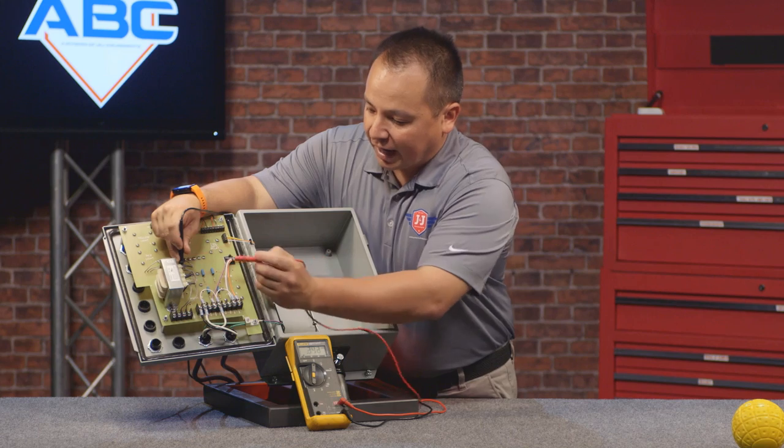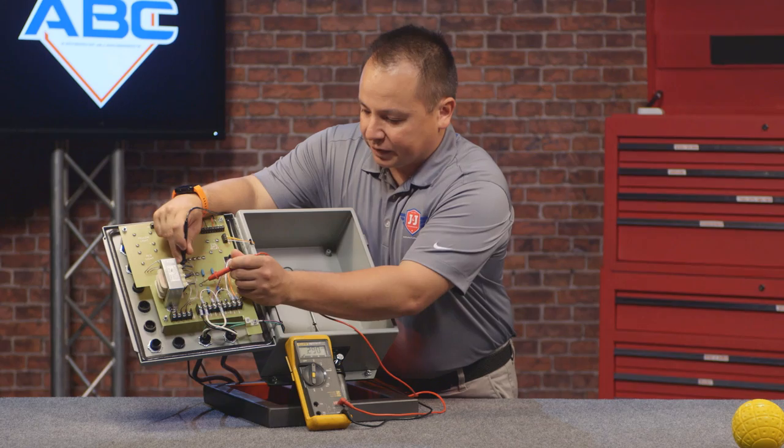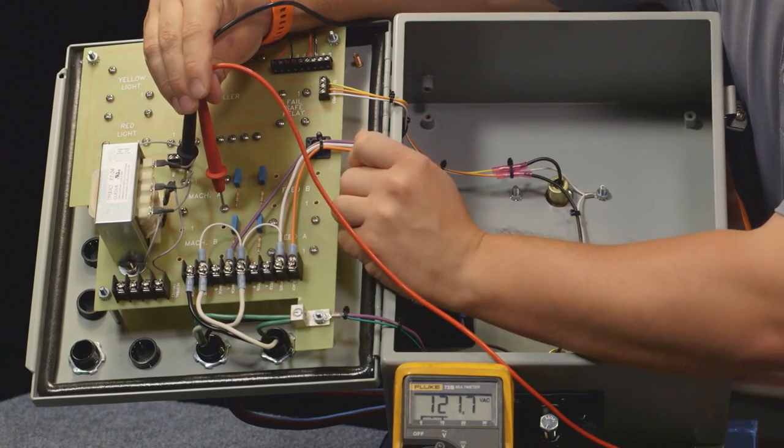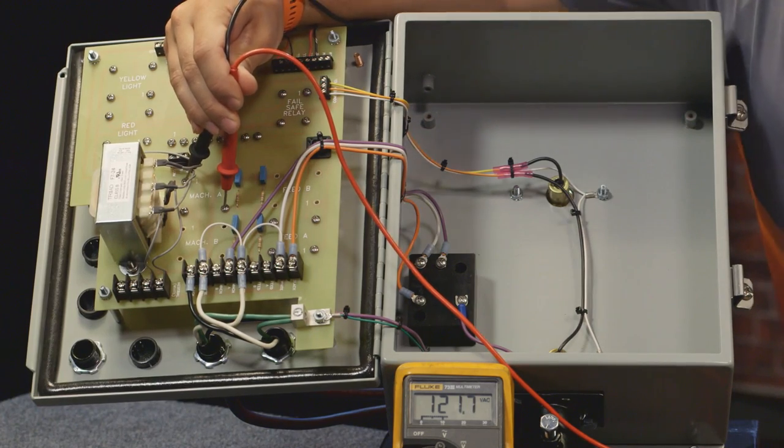After it does that, the relay should be outputting around 115 volts AC, plus or minus 5 or so, to the lower right-hand side screw. And right there, we can see we're getting a little over 121 volts.